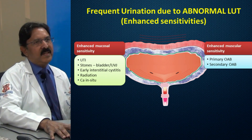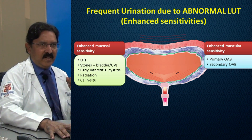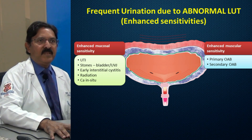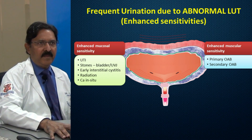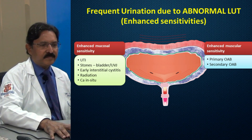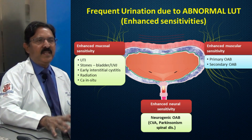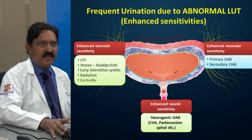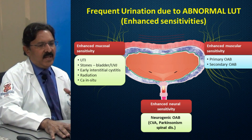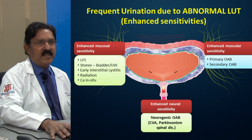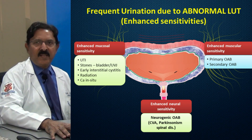The second group involves conditions where the muscle layer of the urinary bladder is at fault, with the mucosa being relatively normal — this is enhanced muscular sensitivity, which is the dominant reason in patients of overactive bladder. All patients of primary overactive bladder have the problem of enhanced sensitivity in their detrusor coat. The third is outside the urinary bladder — the neuronal plexus and nerves going to the spinal cord and brain. Neurogenic overactivity can result from Parkinsonism, cerebrovascular accidents, head injuries, and supra-spinal lesions, all leading to enhanced sensitivity of the urinary bladder.